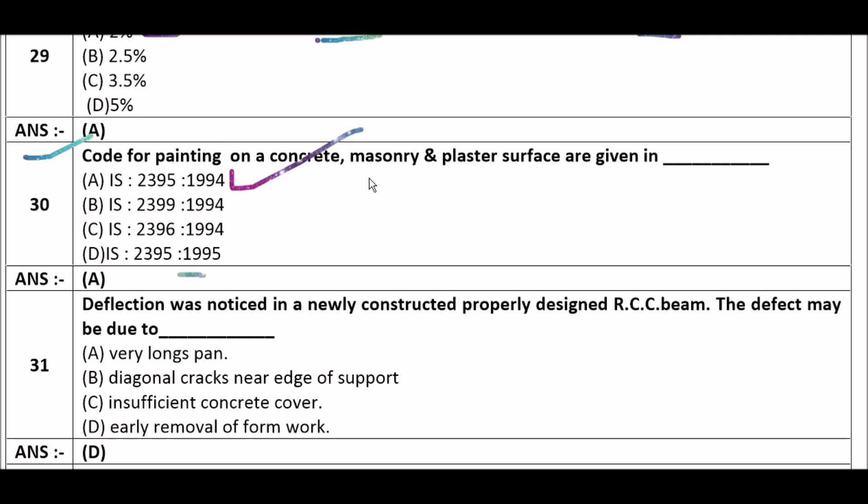Next question: Deflection bars noticed in a newly constructed, properly designed RCC beam — the defect may be due to — option A: very long span, option B: (unclear), option C: (unclear), option D: early removal of formwork. The right answer is option D — early removal of formwork. Deflection noticed in a properly designed RCC beam may be due to early removal of formwork.